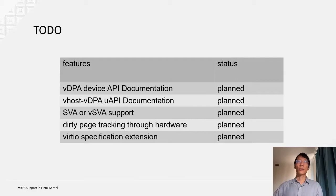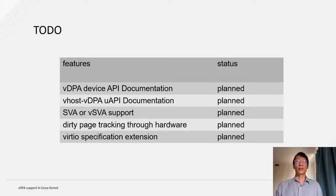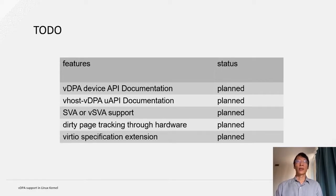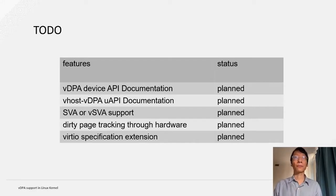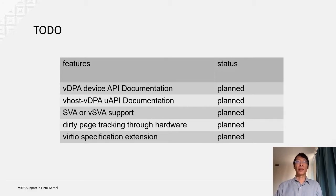For the future, there are several things in our mind. The first is we will need to finalize the documentation in the kernel source, which contains both the VDPA device API definitions and the vhost VDPA UAPI. We will also plan to cooperate with the platform vendors to support shared virtual address or even virtual shadow address. And we will also plan to extend virtio specifications for some VDPA-specific extensions.